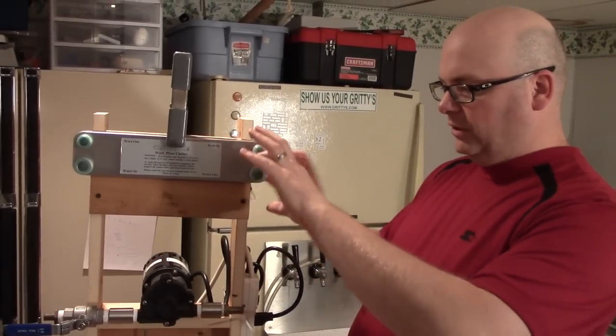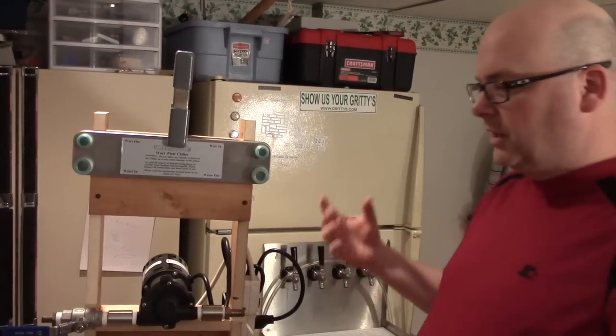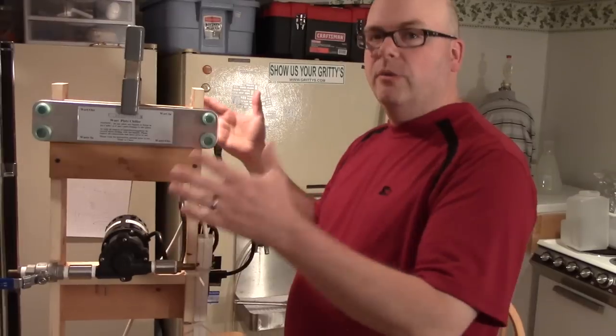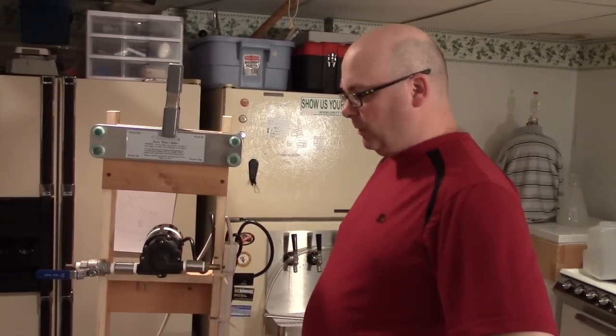Just because of the logistics of having all these hoses crisscrossing and stuff, it might make more sense if this was facing the brew kettle that the chiller was away from the brew kettle. But we'll see, that's live and learn, experiment with it and try it during brewing.